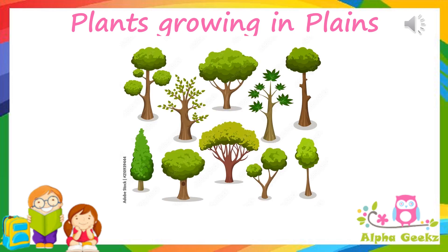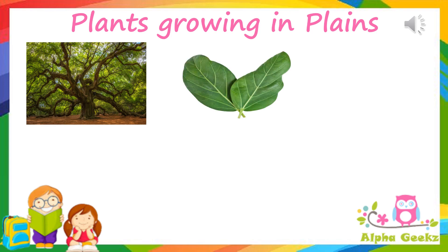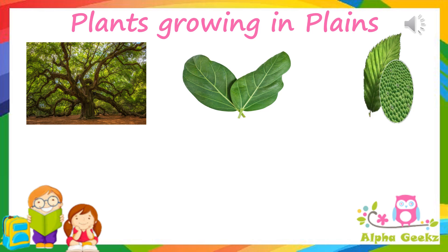Some of the adaptations in plants growing in plains are: the trees growing here have lots of branches. The leaves are thin, broad, flat and lightweight. This enables them to capture a lot of sunlight to prepare food. The leaves have many stomata on the surface, which helps to keep the trees cooled by transpiration.